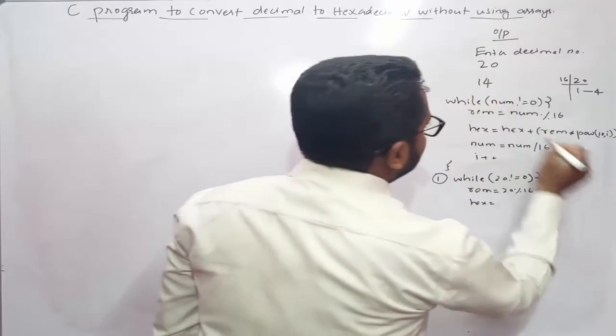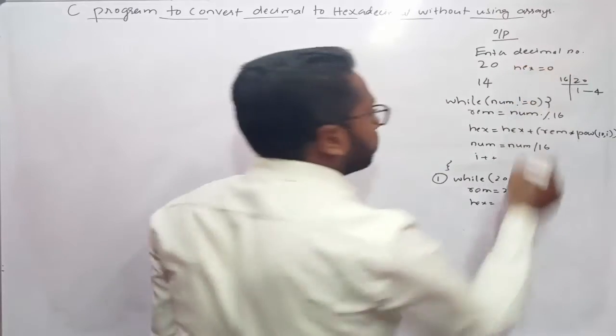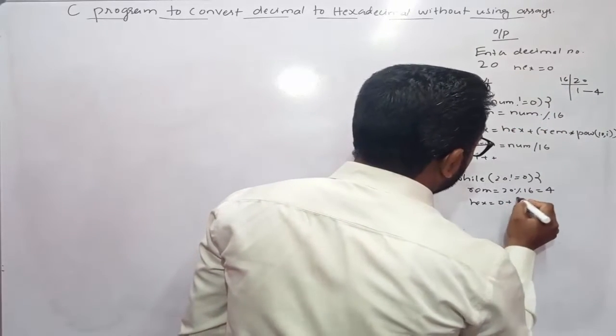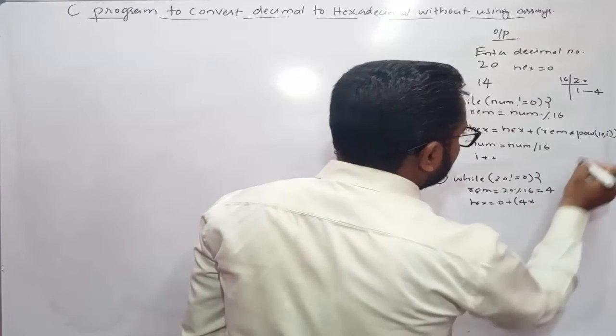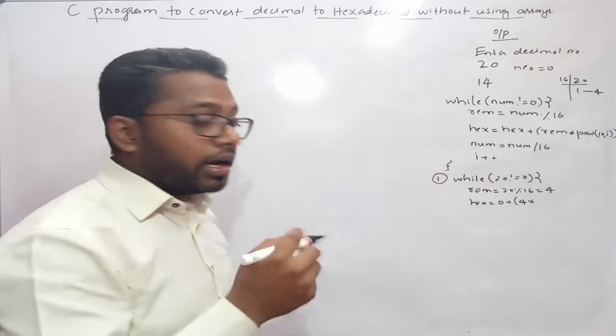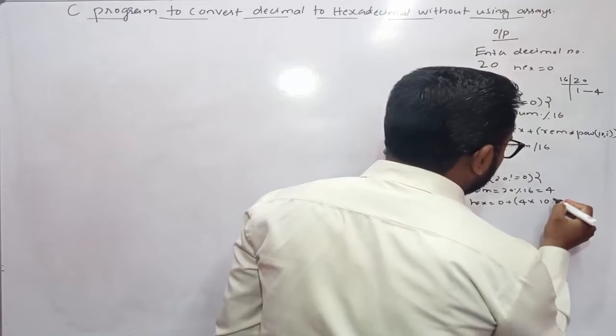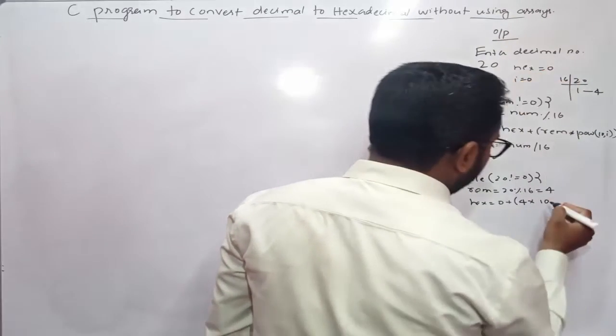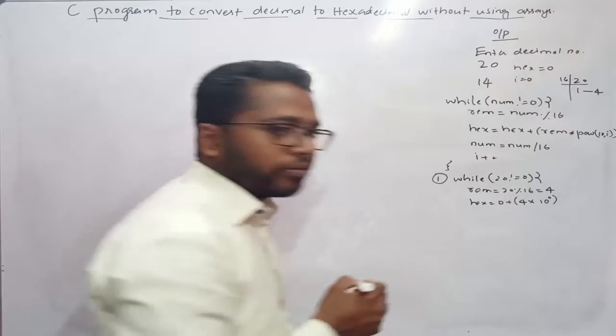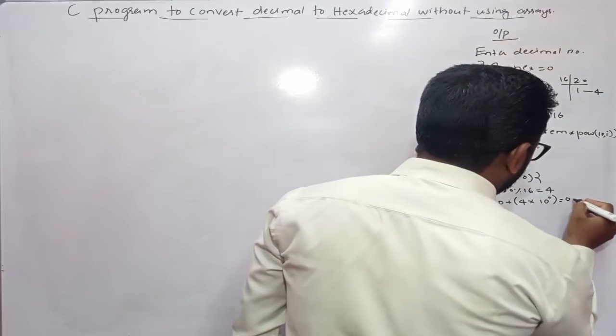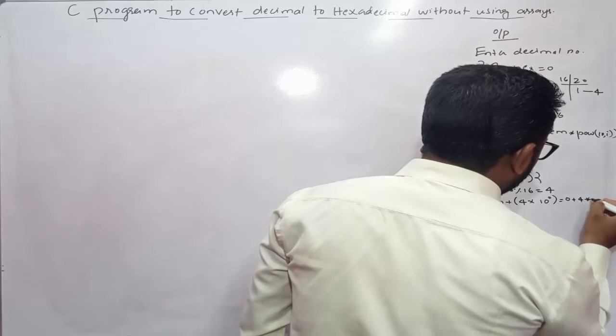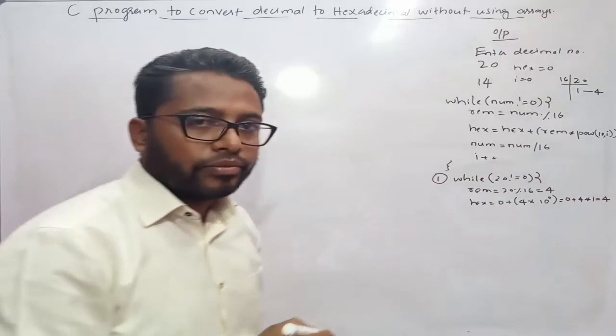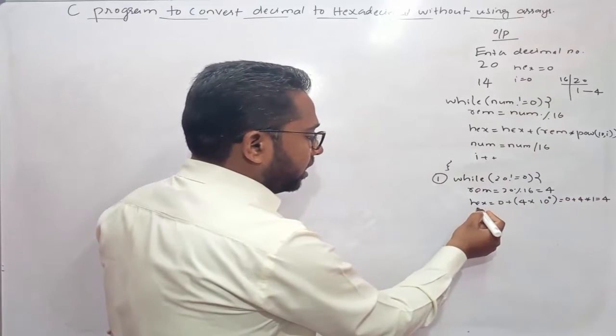Then next is hex equals hex. We need to initialize hex to 0. So 0 which is hex plus remainder, remainder is 4, times power of 10 comma i. 10 raised to i is 0, initially i will be 0. So 10 raised to 0 equals 0 plus 4 times 1, so we get 4. This 4 gets stored inside the variable hex.